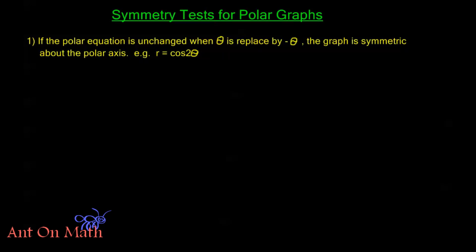Now the first one is if the polar equation is unchanged when theta is replaced by negative theta, the graph is symmetric about the polar axis. So let's take a look at what we mean by symmetric about the polar axis.